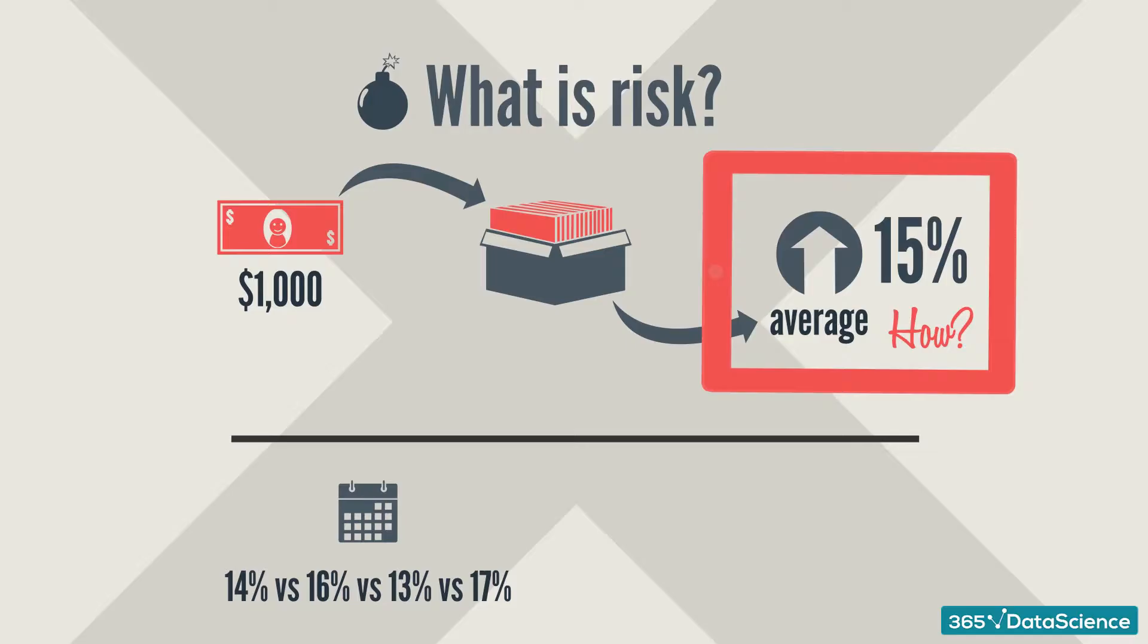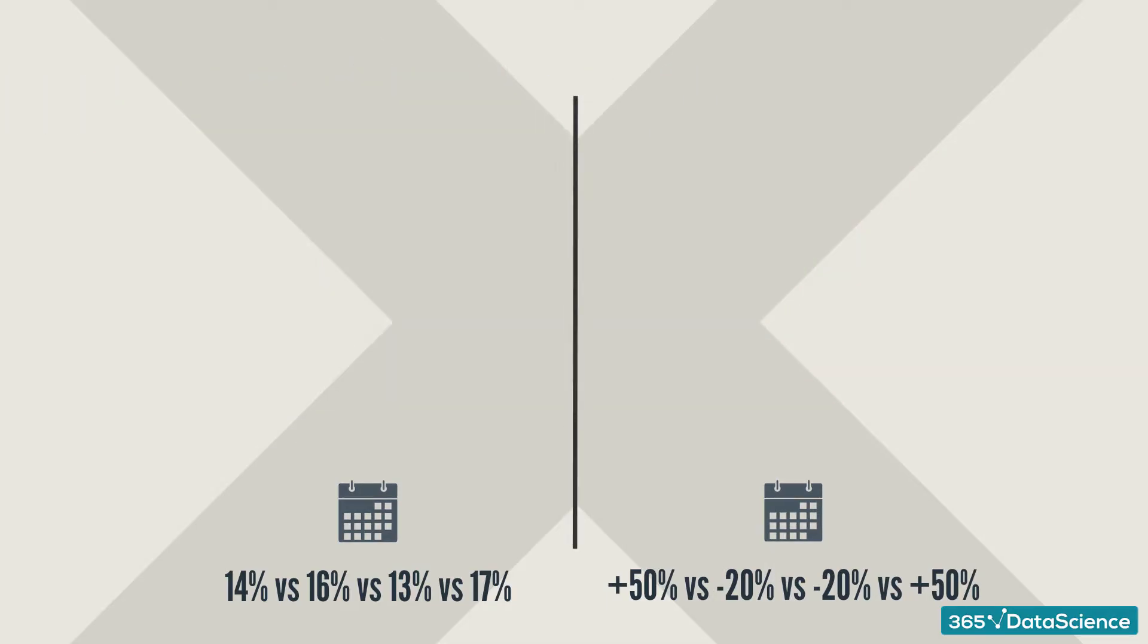Or whether it earned plus 50%, minus 20%, minus 20% again, and then plus 50% in the final year. There's a big difference between the two sets of data, right? In the first case, you can be certain your money will earn an amount that is more or less in line with what you expect.